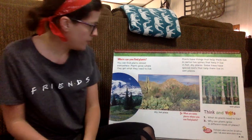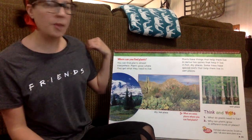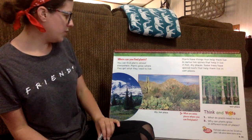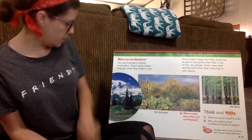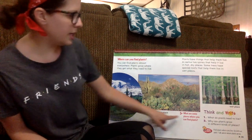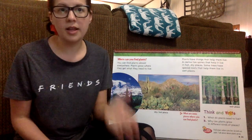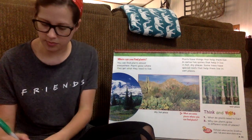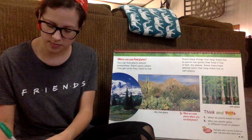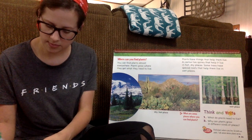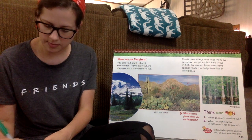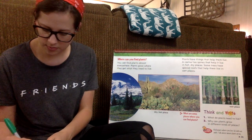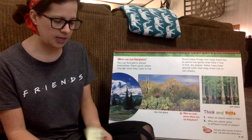So on this page, if I'm looking for the main idea or what the text is mostly about — you can find plants almost everywhere, plants grow where they get what they need. This is a cold place, this is a dry place, this is a wet place. So we're talking about the places that plants grow. I'm going to write that on my sticky note: main idea — places plants grow. I'm going to stick my main idea right here.